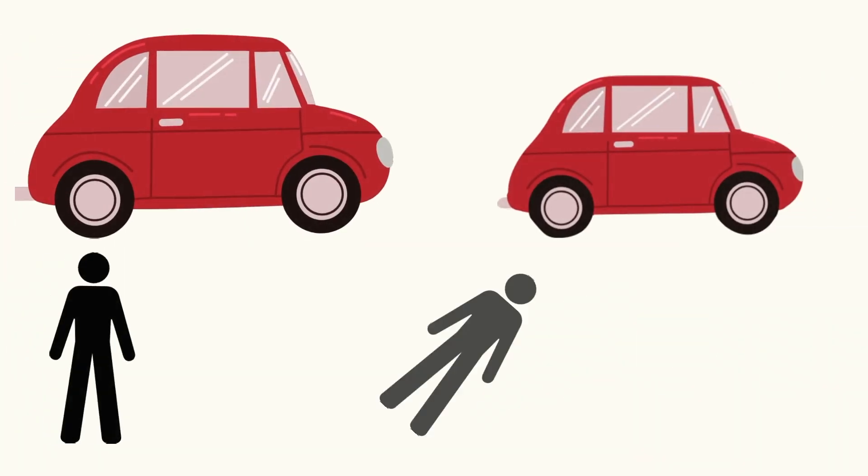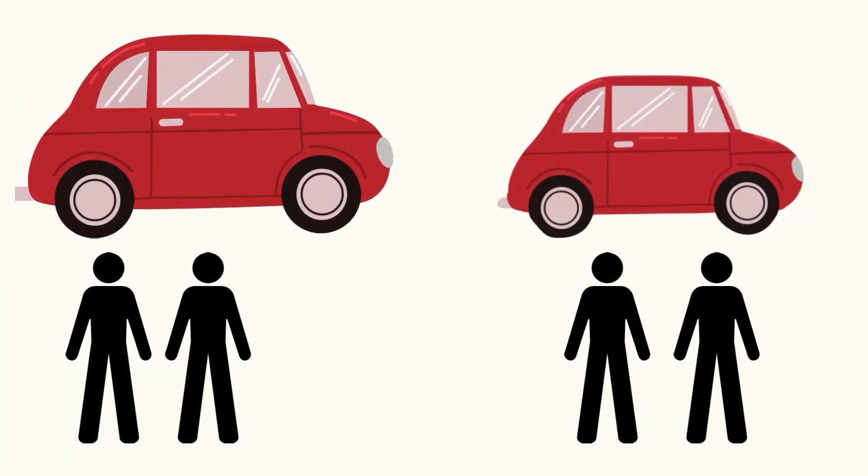For our second example, let's say we have two cars. Car A is big and has two passengers, while car B is small and also has two passengers.